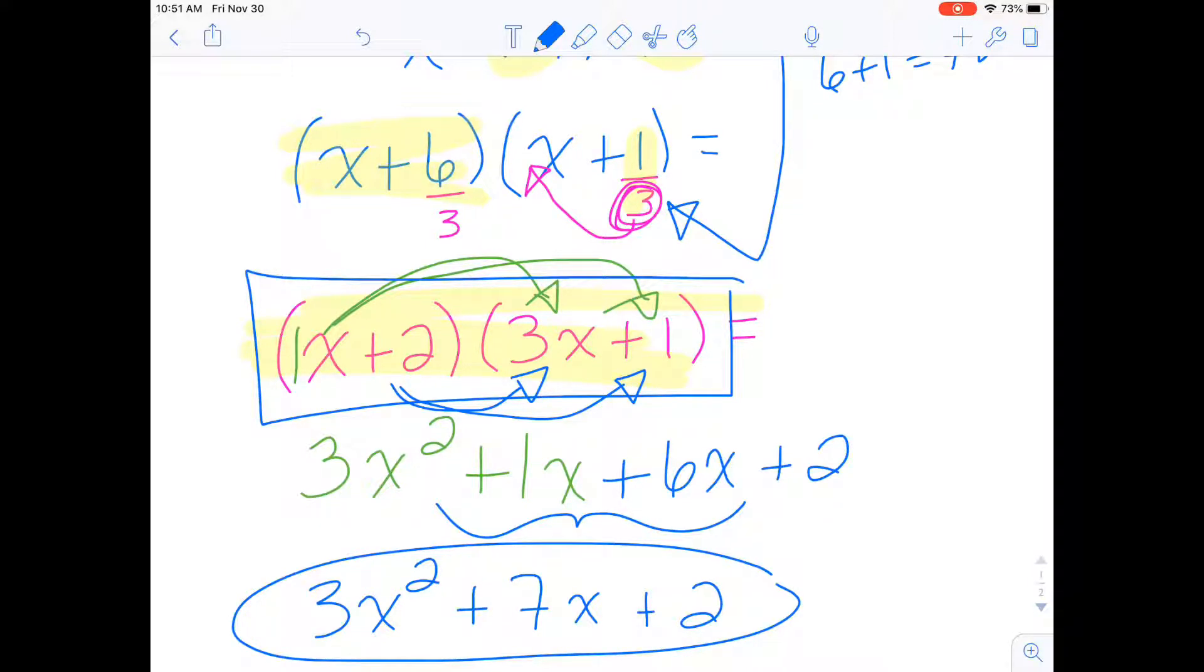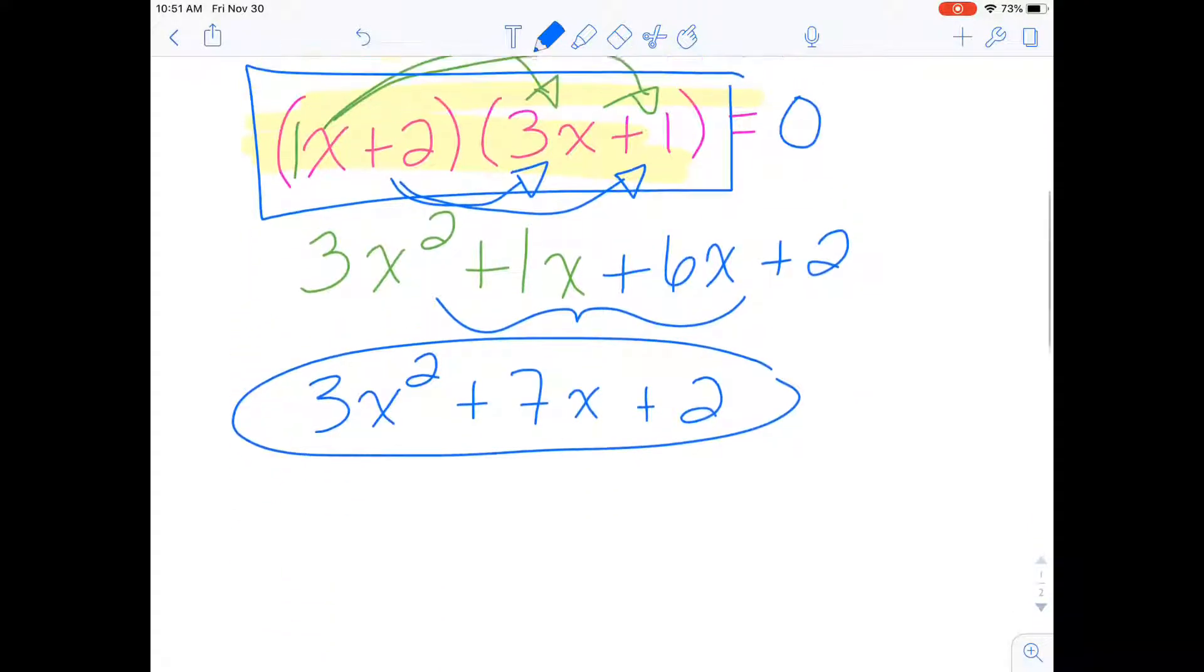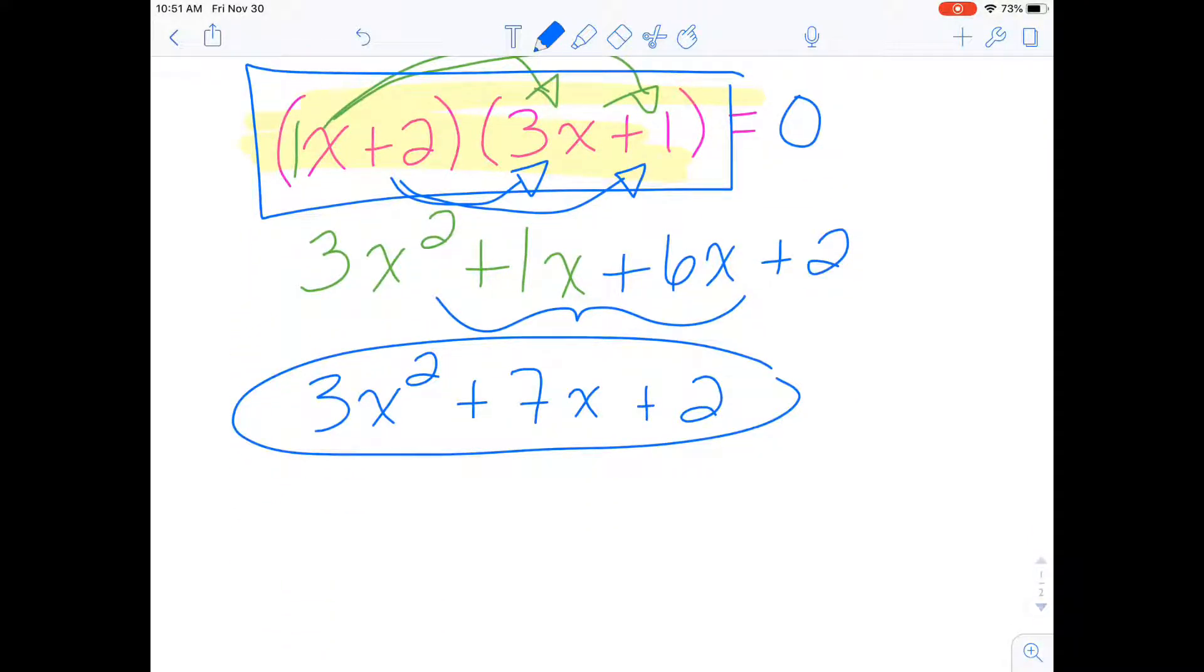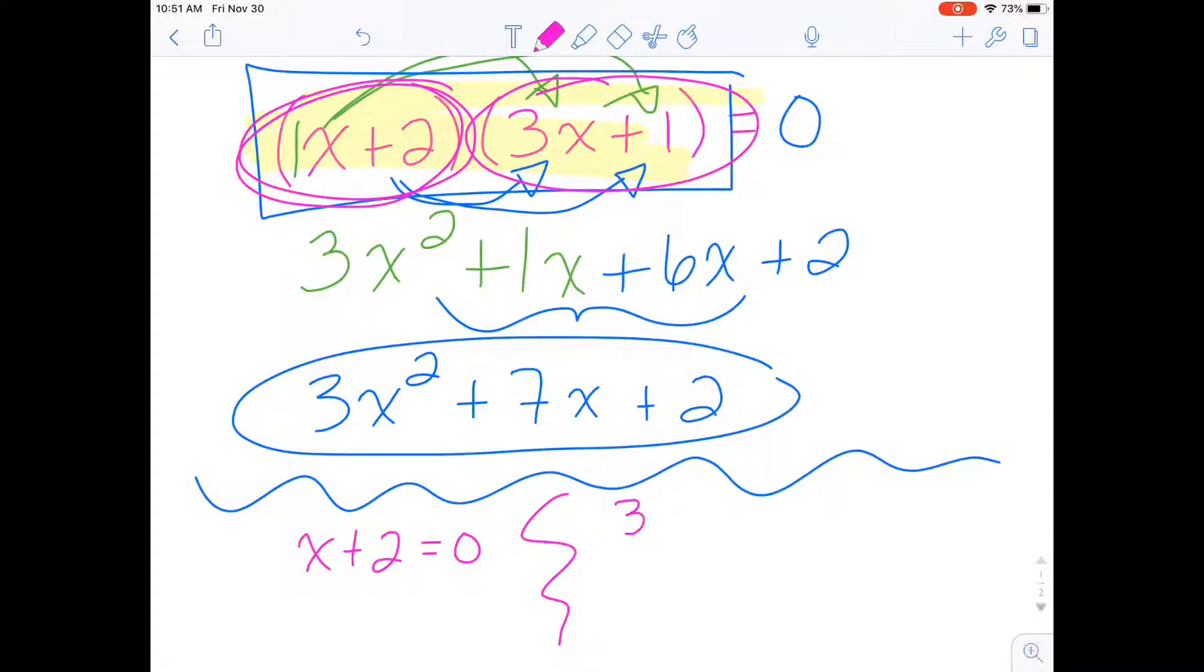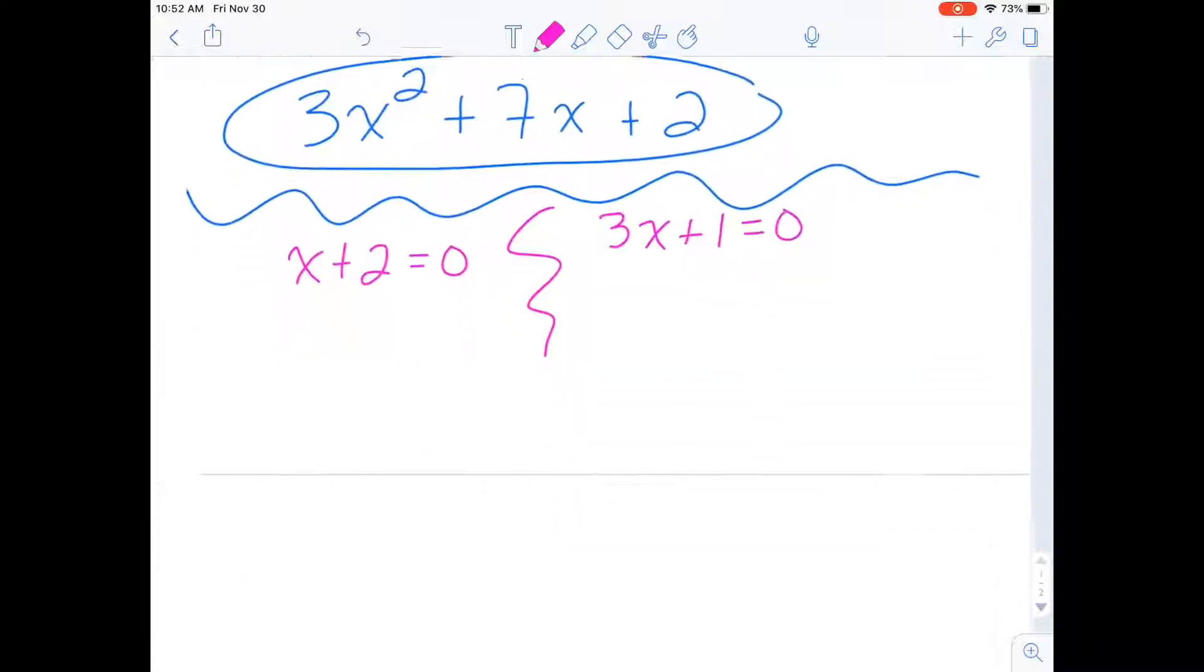Now, those are my factors. What if I actually wanted to solve for the value of x? So we are going to create two equations here. We'll have x plus 2 equals 0. That's this one right here. And then we will have 3x plus 1 equals 0. And we will simply solve for x.